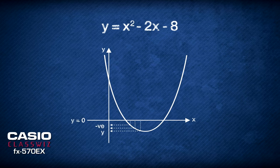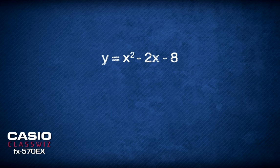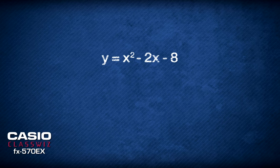To start solving this equation, let's factorize this quadratic function. Factorizing it, we have x minus 4 times x plus 2.